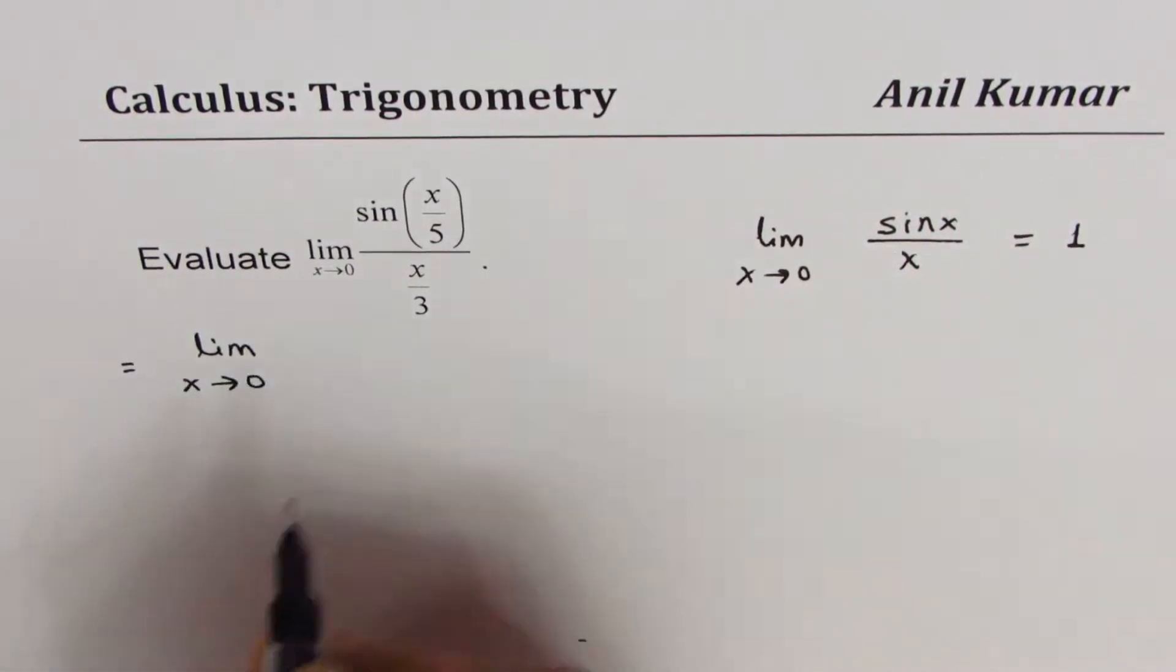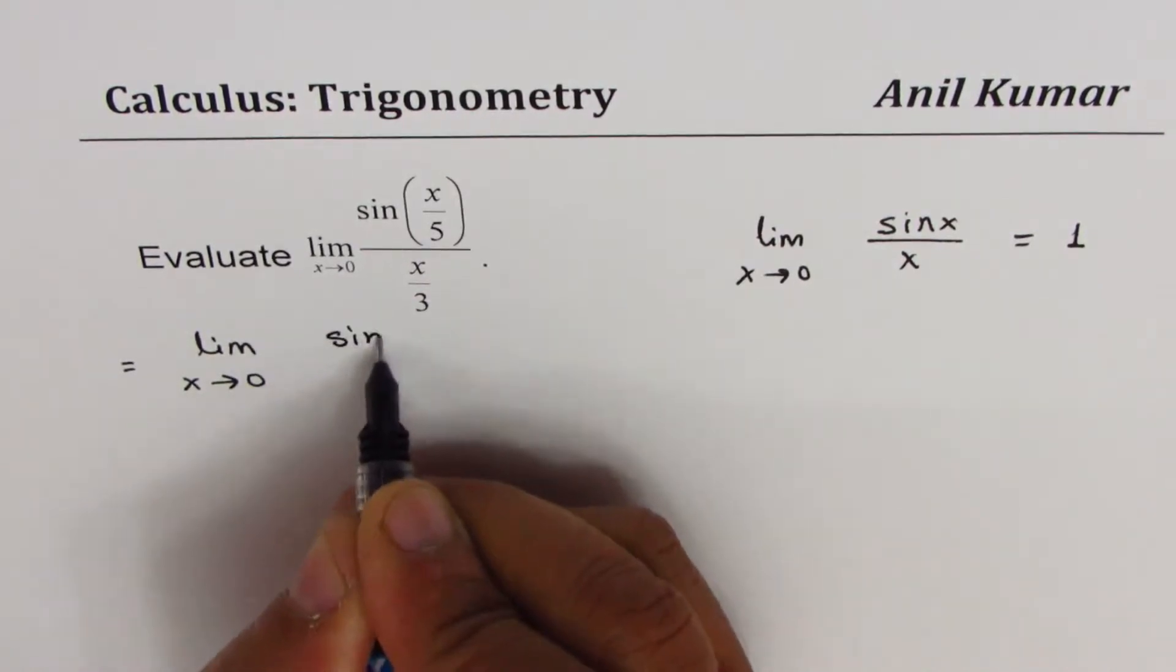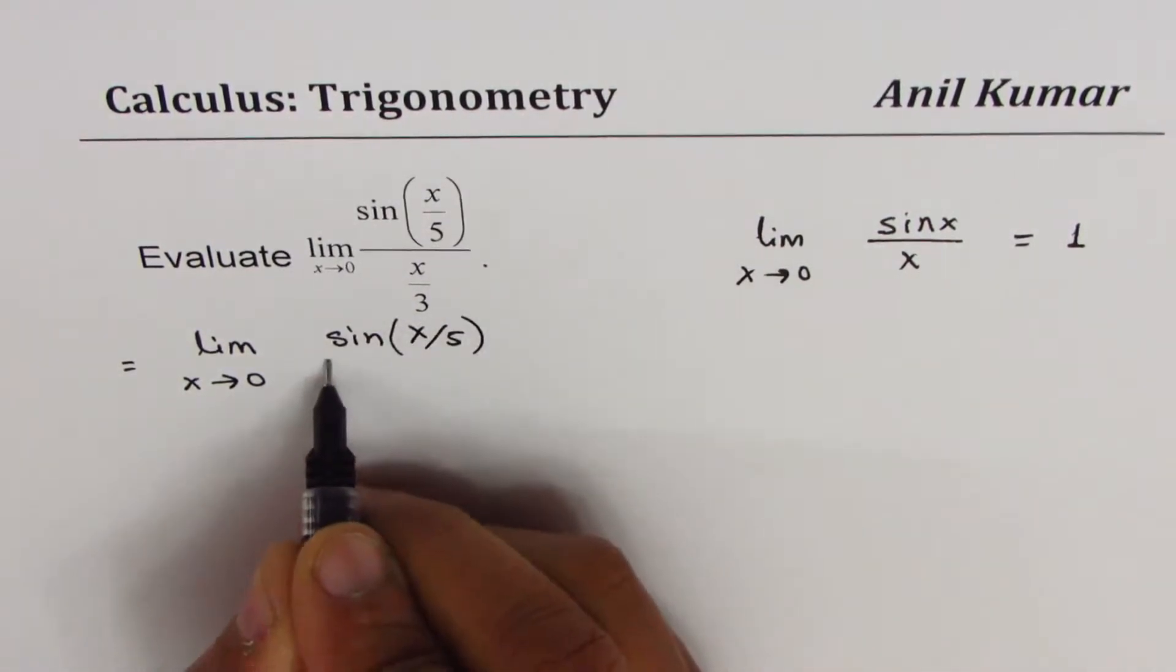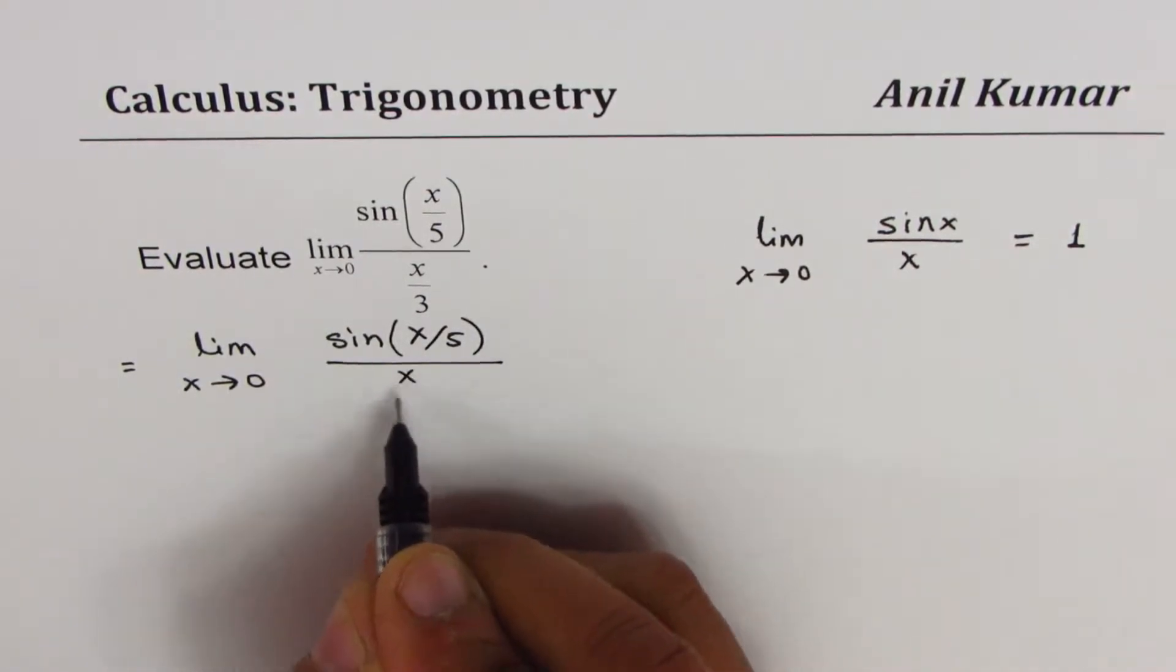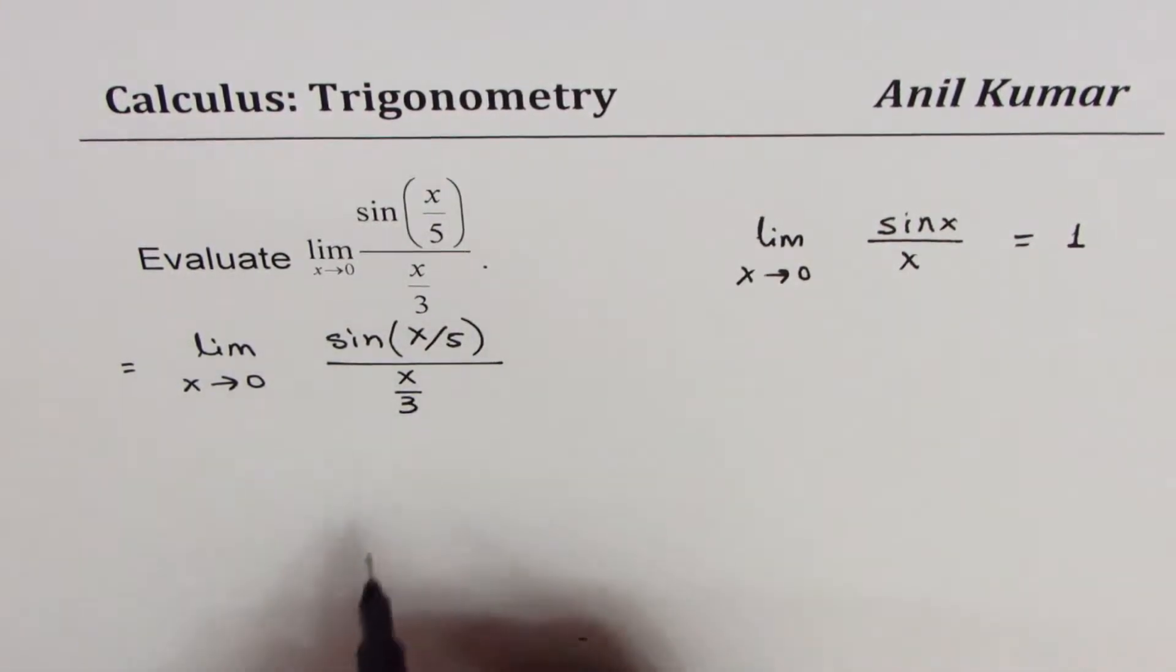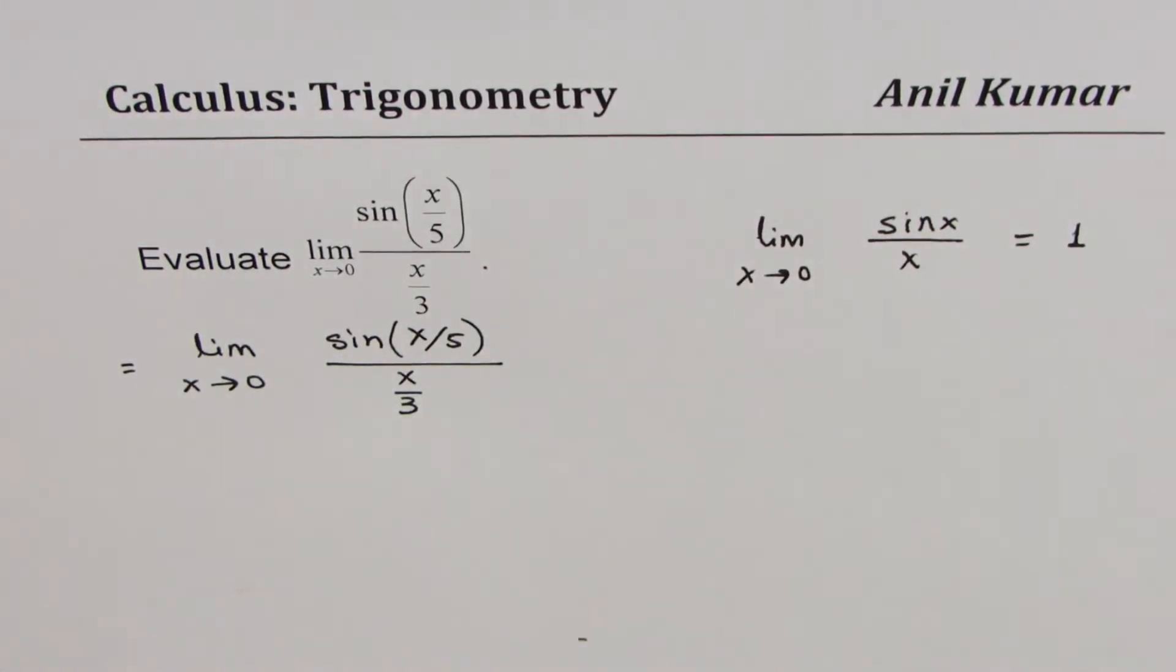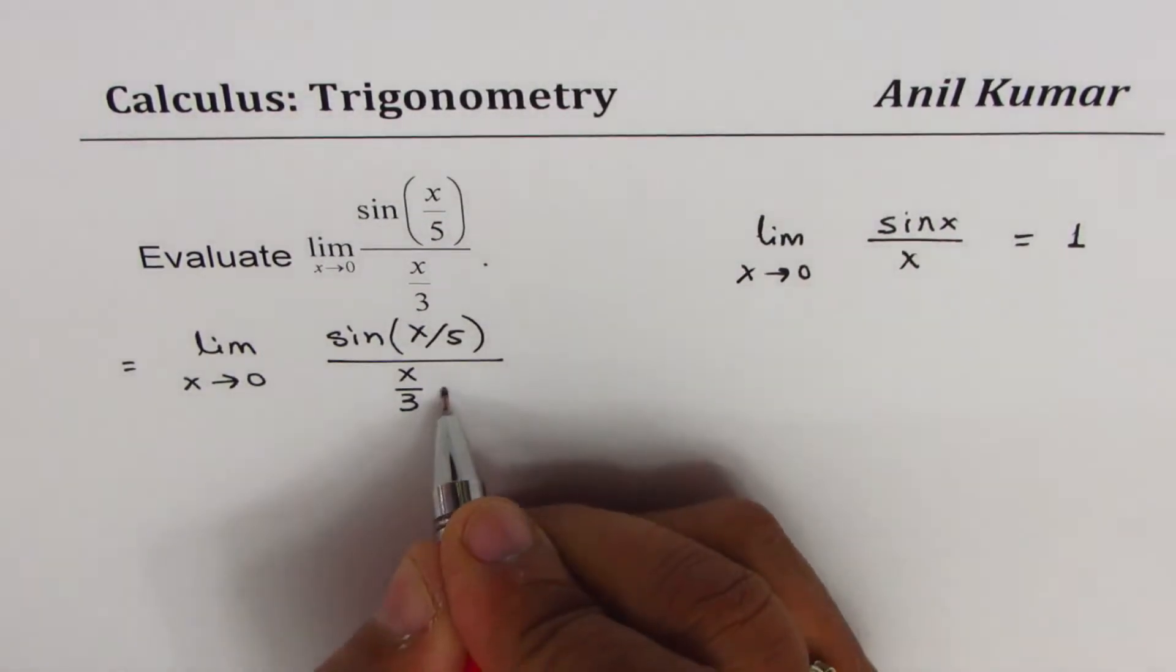Limit as x approaches 0: we have sin(x/5), and in the denominator we have x/3. I want to get x/5 here instead of x/3, right? So what I can do is multiply and divide by 5.